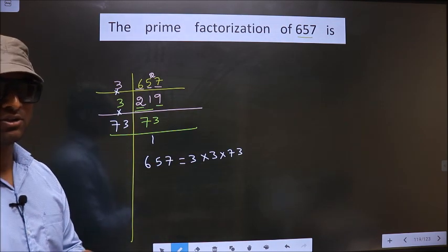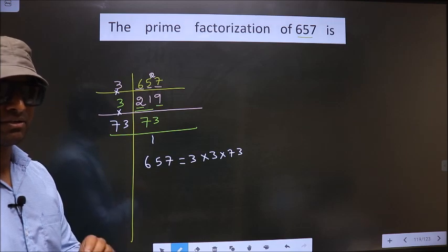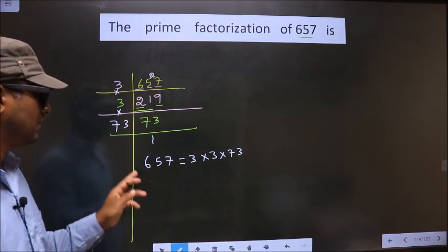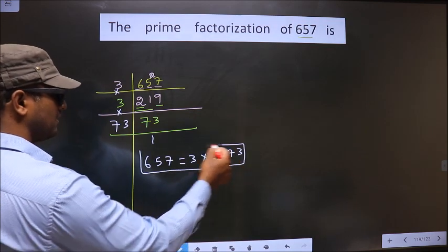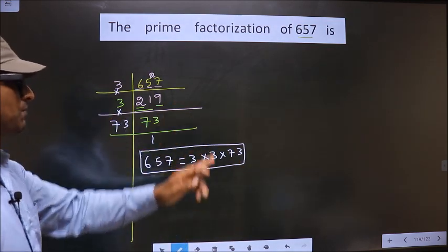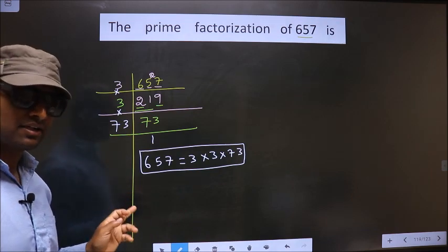This is also called the product of prime numbers of 657. So this is our answer. Am I clear?